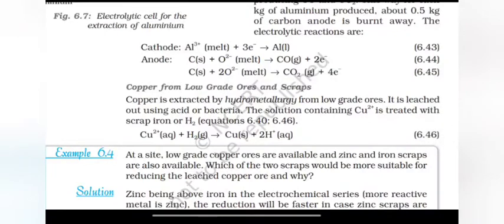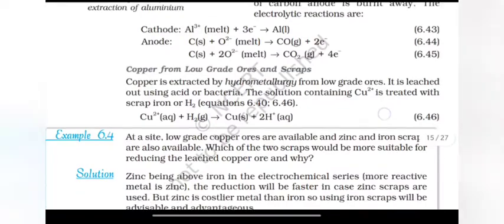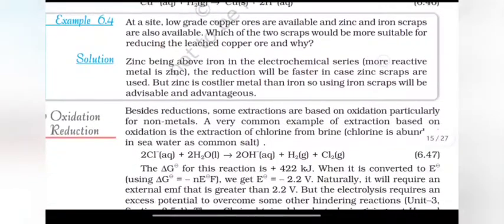Copper from low-grade ores and scraps. Copper is extracted by hydrometallurgy from low-grade ores. It is leached out using acid or bacteria. The solution containing Cu2+ is treated with scrap iron or hydrogen. Cu2+ plus H2 gives Cu plus 2H+.